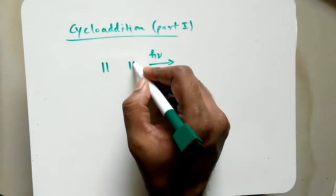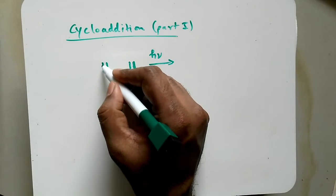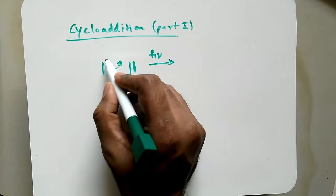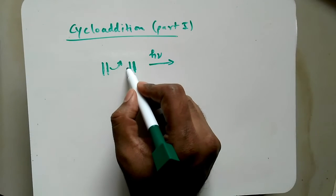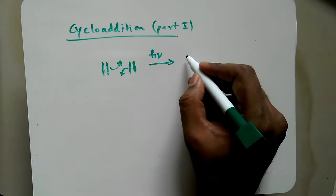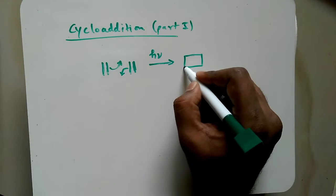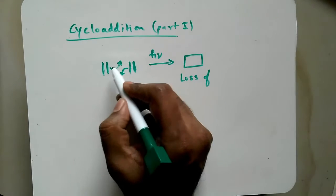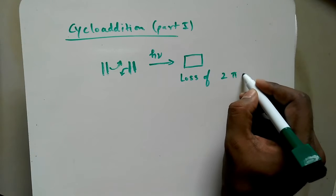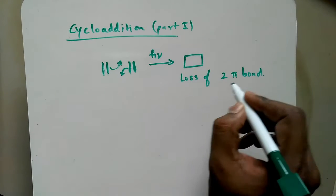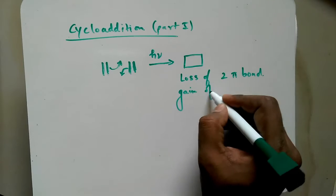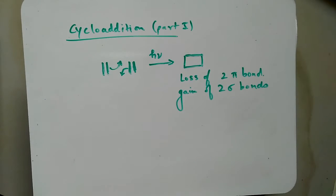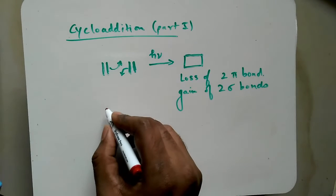We'll check what happens under thermal and photochemical conditions. This double bond falls here to form a bond on this side, and this double bond falls on this side to form a bond here, so we get a cyclobutane ring. There is loss of two pi bonds and gain of two sigma bonds — these are the two new sigma bonds.